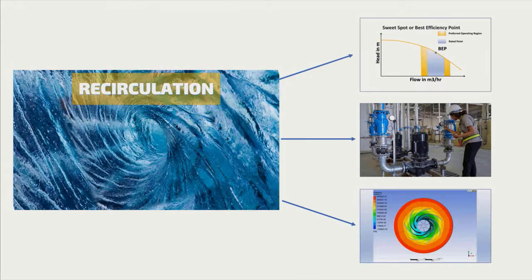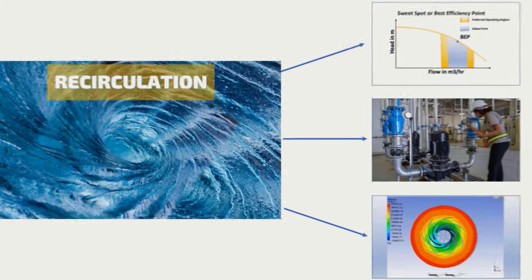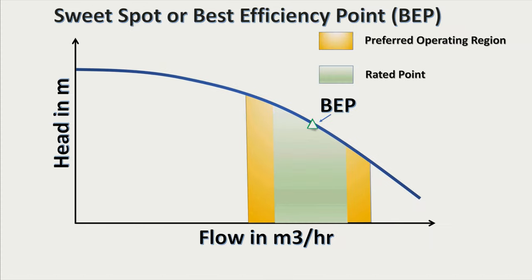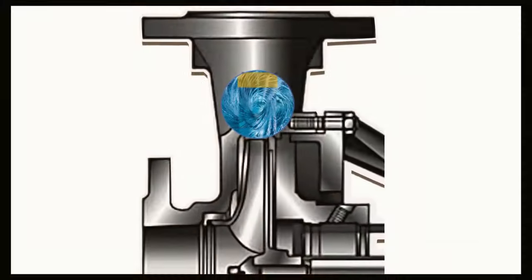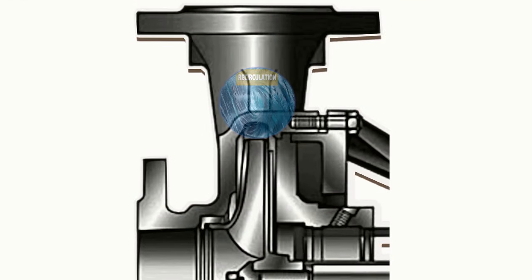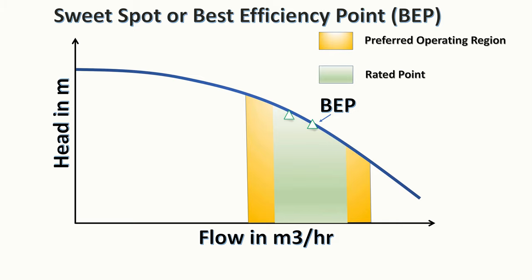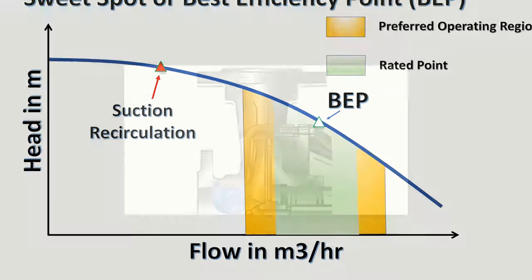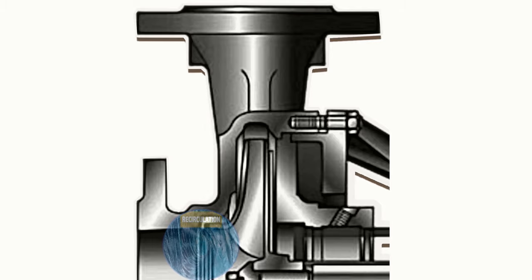Recirculation can happen in a pump system due to three possible reasons. The first is when the pump operates away from its sweet spot, called the Best Efficiency Point (BEP). This is the flow point where the pump yields maximum performance and minimal recirculation. Deviating away first results in discharge recirculation, and deviating further results in suction recirculation, which impacts the Net Positive Suction Head required and amplifies cavitation.